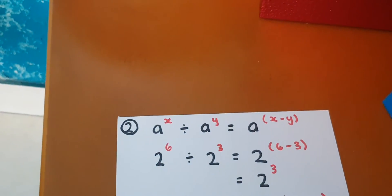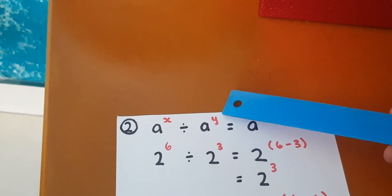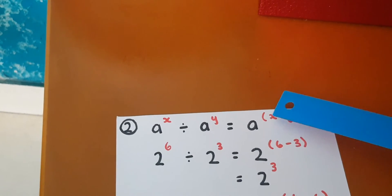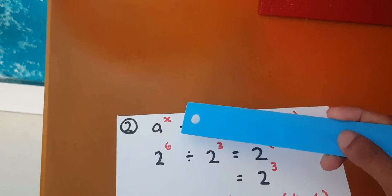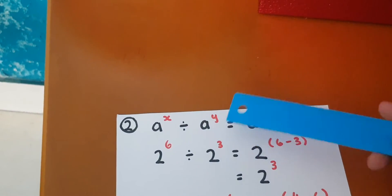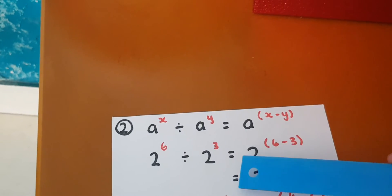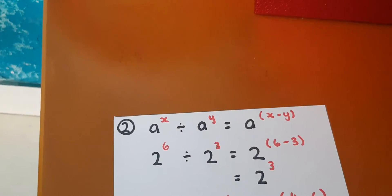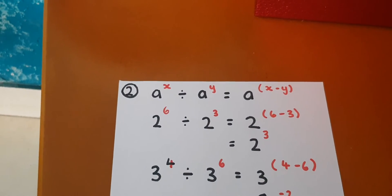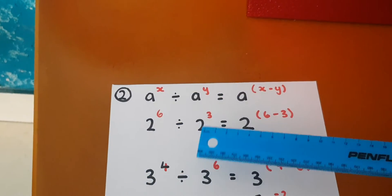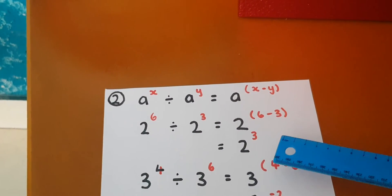Moving to the second law: a to the power x divided by a to the power y is equal to a to the power x minus y. Let's put some numbers in — two to the power six divided by two to the power three is equal to two to the power six minus three, which equals two to the power three. Another example: three to the power four divided by three to the power six is equal to three to the power four minus six.